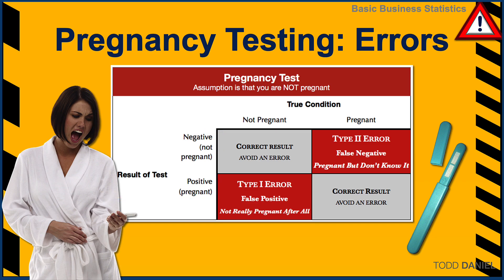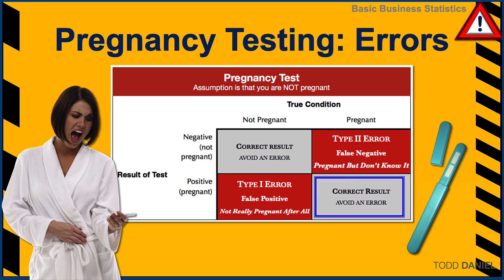If the test says that you're not pregnant, and you in fact are not pregnant, then this is a correct result — we've not made an error. On the other hand, if the test is positive, saying that you are pregnant, and in fact you are pregnant, this is also a correct result. However, if the test says that you're pregnant and you are not in fact pregnant, this is an error — we call it a type 1 error. The alternative would be when the test says that you are not pregnant, and in fact you are. This is called a type 2 error.